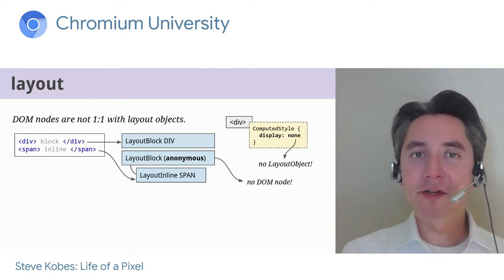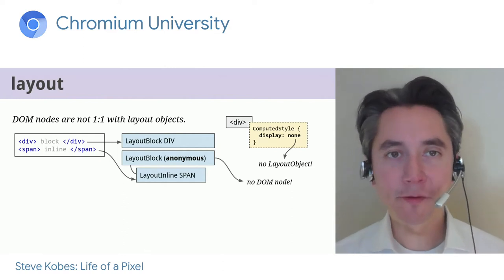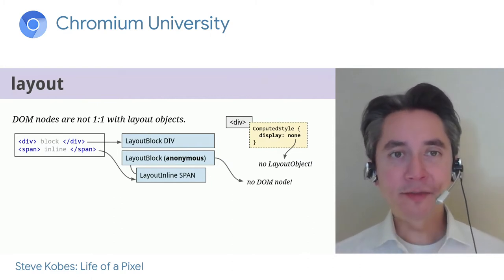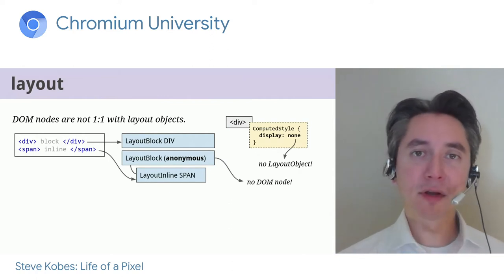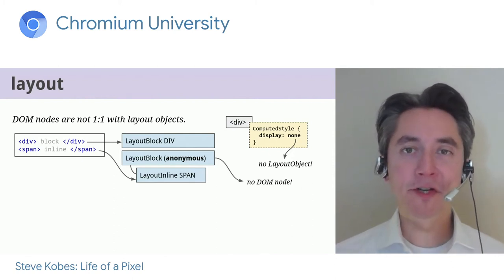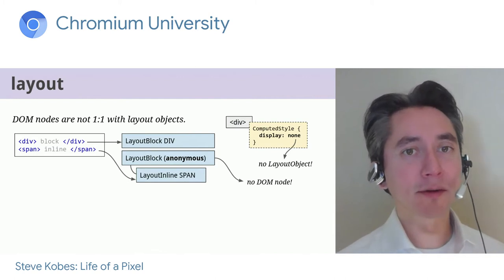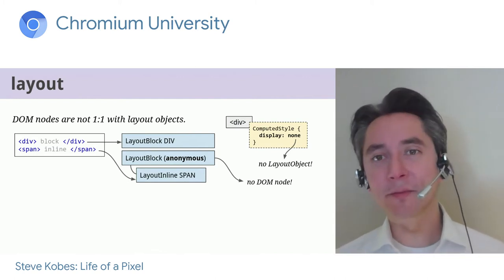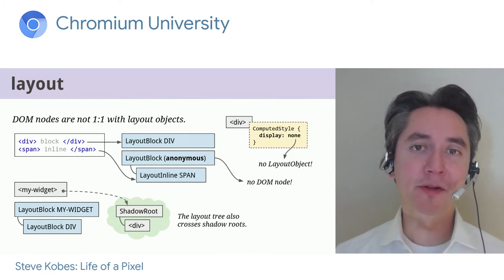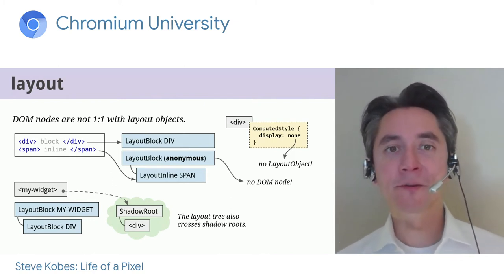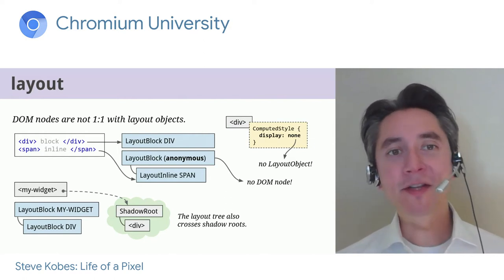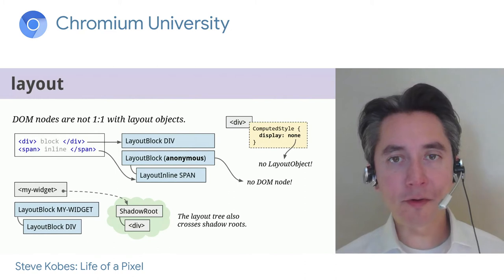Layout operates on a separate tree linked to the DOM called the layout tree. Nodes implement layout algorithms — LayoutBox, LayoutInline, LayoutTable, etc. — all inheriting from the common base class LayoutObject. Building this tree happens at the end of style resolution; the layout stage then traverses it to figure out geometry, line breaks, and scrollbars. In simple cases DOM nodes are one-to-one with layout objects, but there are exceptions: display:none creates no layout object, and sometimes anonymous blocks are inserted to avoid mixing block and inline siblings. The layout tree is based on the flat tree traversal, so a layout object may belong to a different DOM tree from its layout container.